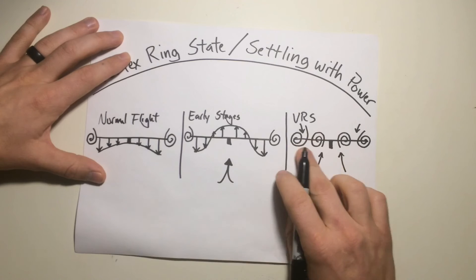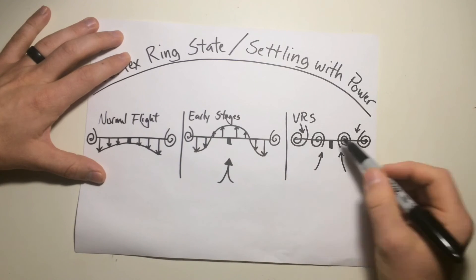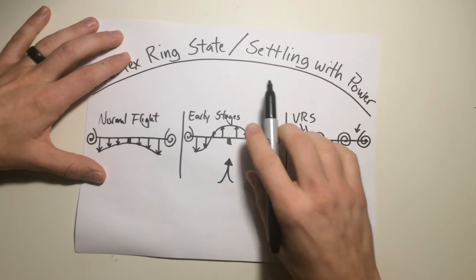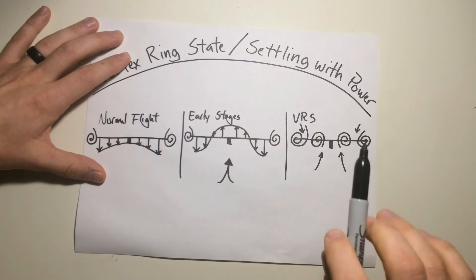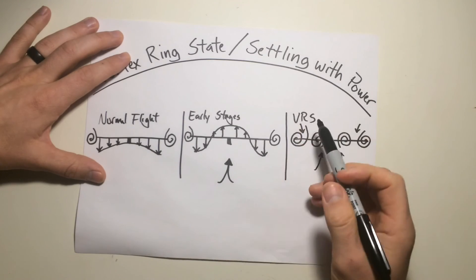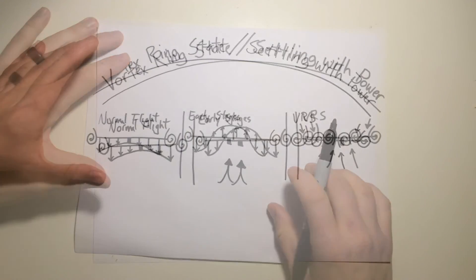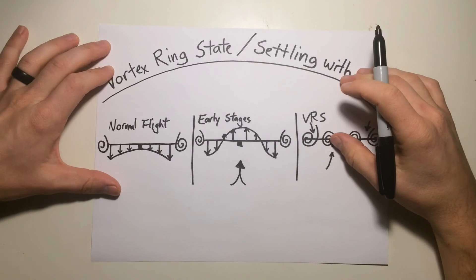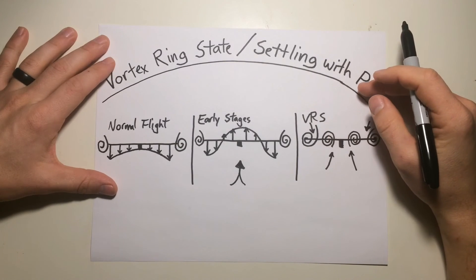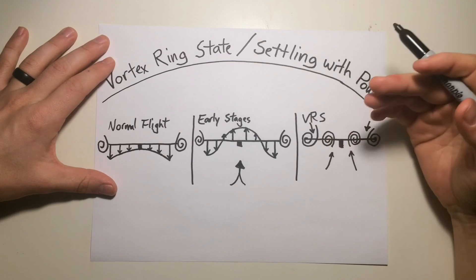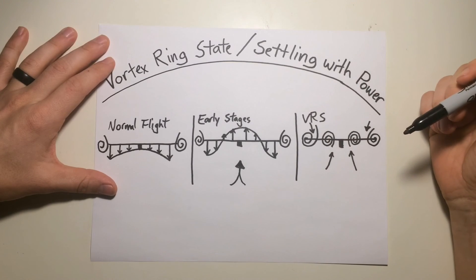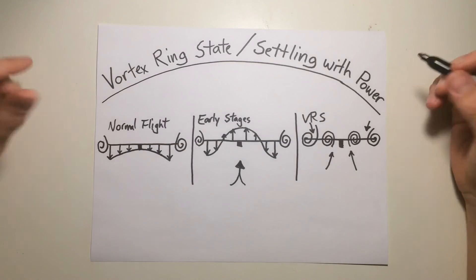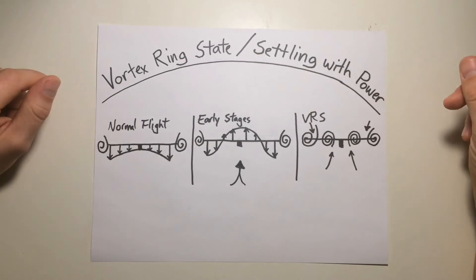Vortex ring state is the developing of these vortices across the helicopter. Settling with power is when the helicopter continues to fall through on its descent even though it has power applied, because it's settling into its own downwash — its own wingtip vortices — with power applied. That wraps up part one of the vortex ring state slash settling with power video. In the next video I'll go over the three requirements to get into a vortex ring state, the conditions conducive to it, and how to recover. Thanks for watching — tune in for part two.